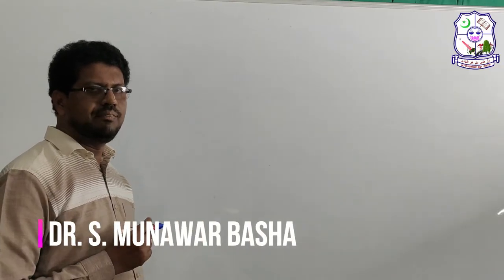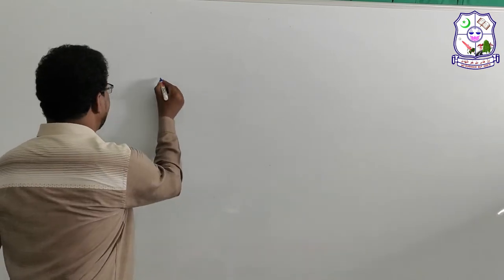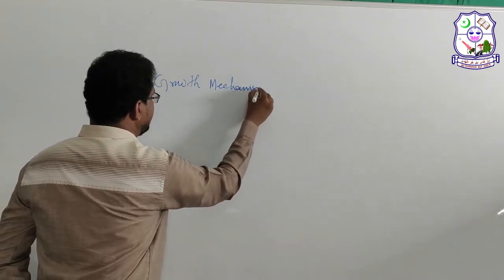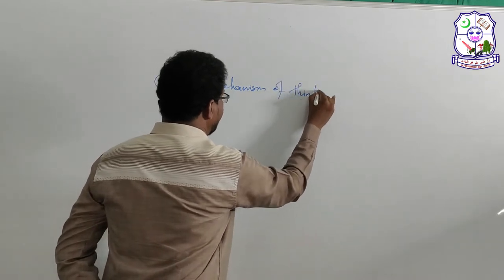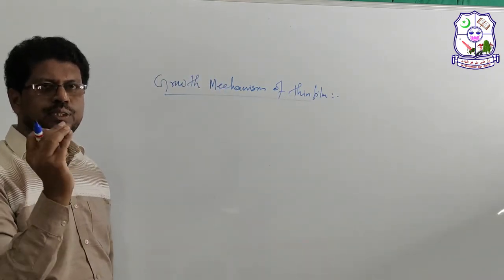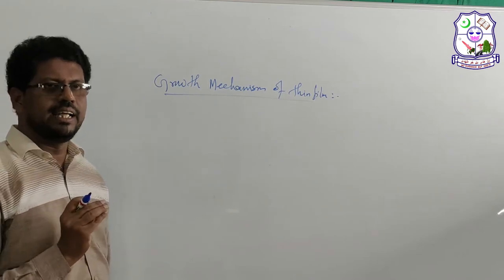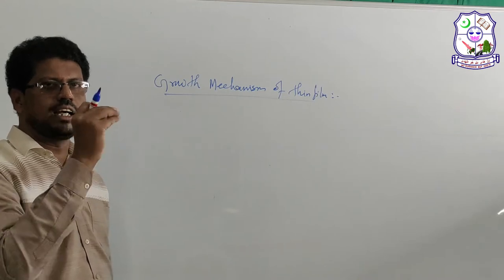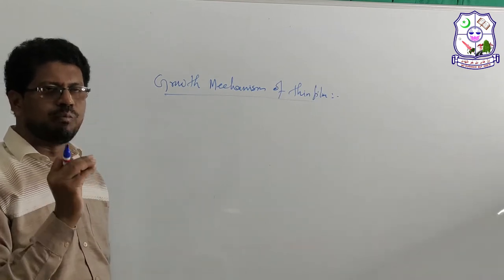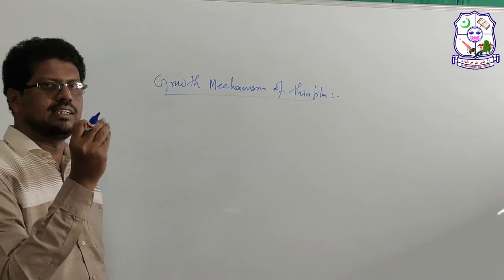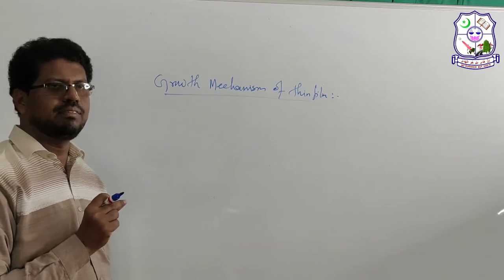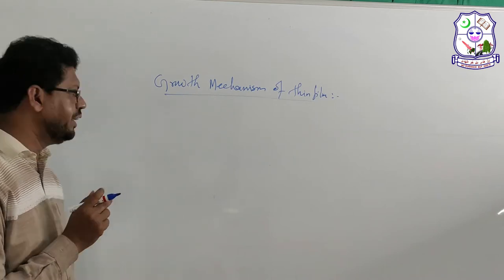Dear students and viewers, as I discussed in the previous class about the growth mechanism of a thin film, I discussed three important concepts: one is the adsorption of the atom on the surface of the substrate, then surface diffusion, and finally the formation of a bond between the incoming atom and the surface, resulting in the formation of a thin layer. After that, there is another important mechanism in the growth of a thin film — it is nothing but the nucleation.